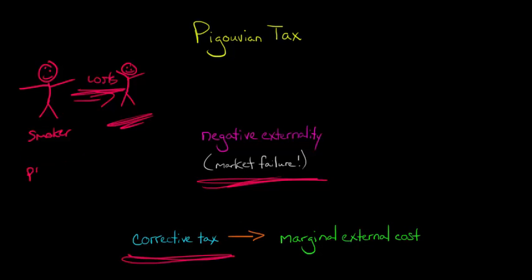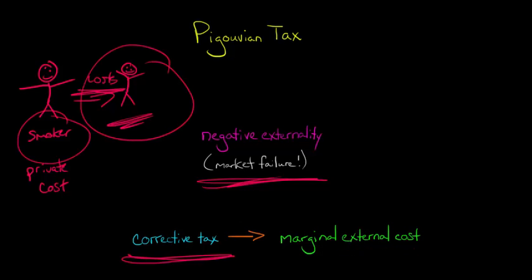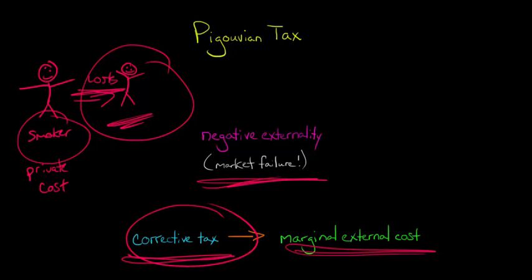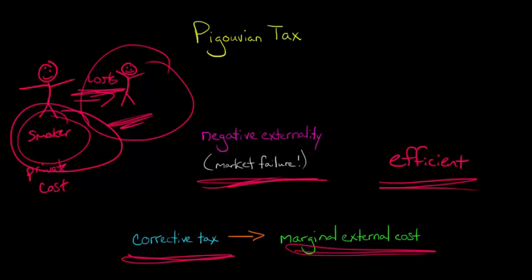The marginal private cost to the smoker is just what may happen to the smoker personally. But the external costs are the costs to everybody other than the smoker — for example, the roommate. So if you set a corrective per-unit tax, for example on every pack of cigarettes the smoker smokes, and you set it equal to the external cost per unit — the cost the roommate incurs for every pack smoked — by doing that you can bring about the socially efficient outcome where the smoker is smoking the socially efficient number of packs.